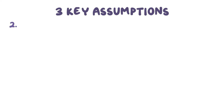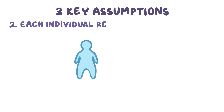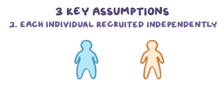The second assumption is that each individual in the sample was recruited independently from other individuals in the sample. In other words, no individuals influenced whether or not any other individual was included in the study. For example, if two friends decided to get their blood pressures measured on the same day and they were both included in the study, these two individuals would not be independent of each other, and the second assumption would not be met.